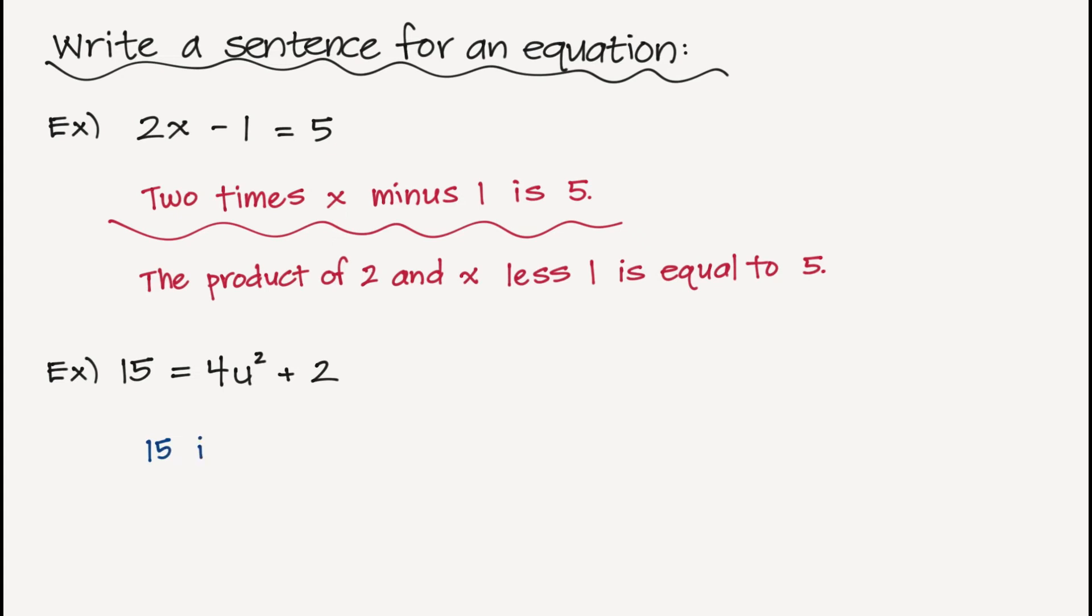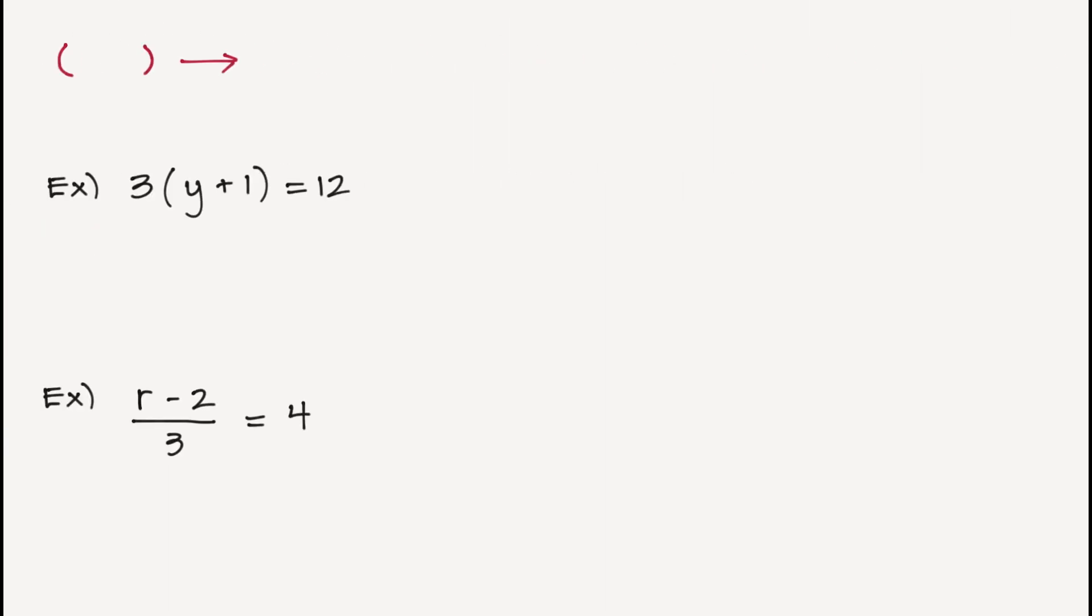But let's go ahead and do the next one. I have 15, and maybe this time I'm just going to say is 4 times U squared plus 2. And maybe you could come up with another way to write that out. But this is just one way to write a sentence for this equation.